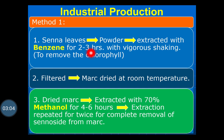Using the Soxhlet apparatus, the powdered Senna leaves are extracted with benzene for 2 to 3 hours to remove the chlorophyll present in the leaf. After completion of 2 to 3 hours, the mixture is filtered, the filtrate is removed, and the marc is dried at room temperature.